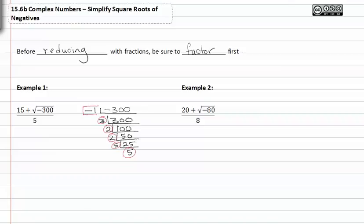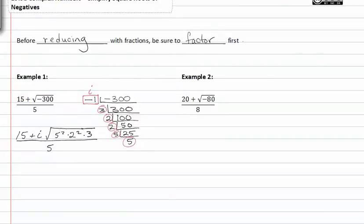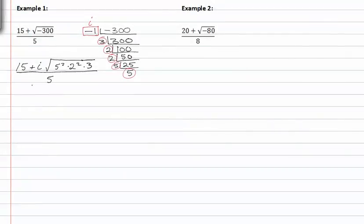The negative one we're going to pull out of the radical as an i. We've got fifteen plus i root five squared times two squared times three all over five. From here we can pull out a five and a two in addition to the i.